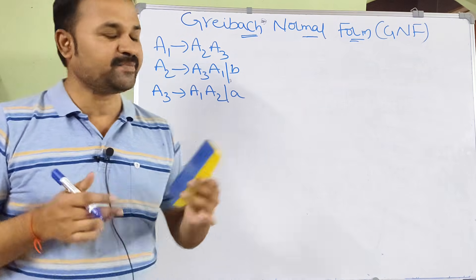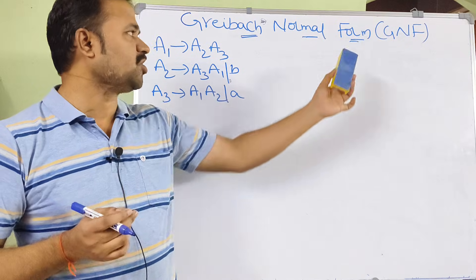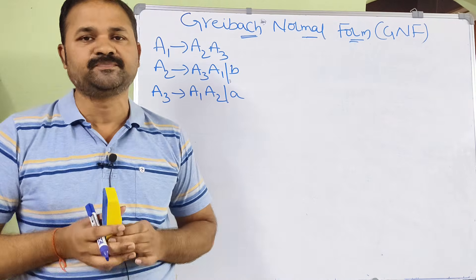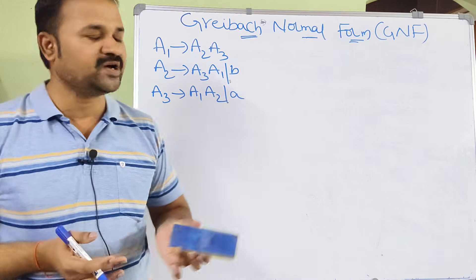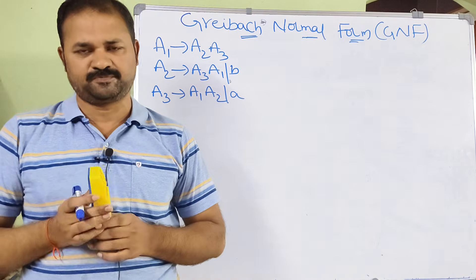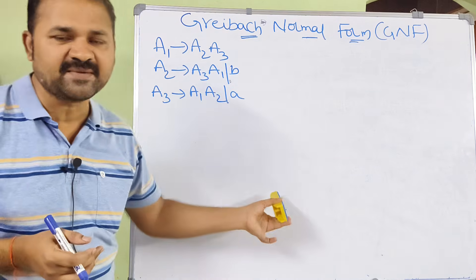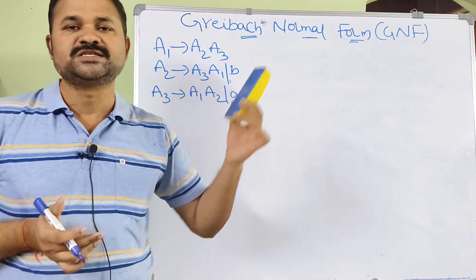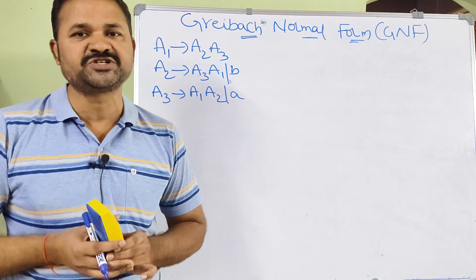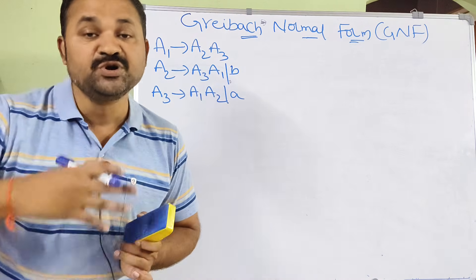Let us discuss Greibach Normal Form, in short GNF. A context-free grammar is given, and now we have to convert this context-free grammar into the Greibach Normal Form. The first step is to simplify the grammar. Already, this grammar is a simplified grammar — it does not contain any useless symbols, any null or epsilon productions, or unit productions.